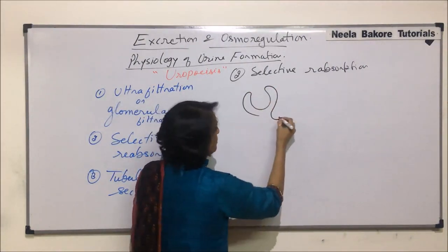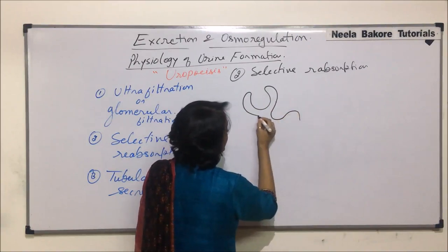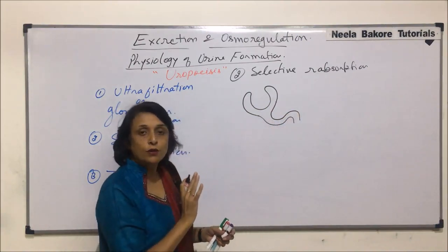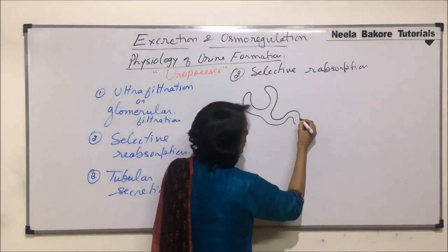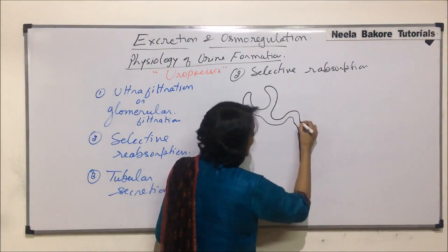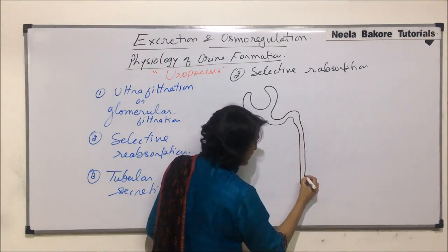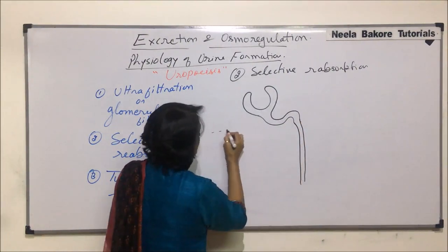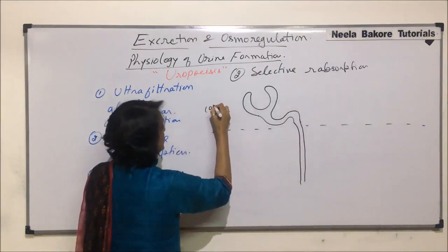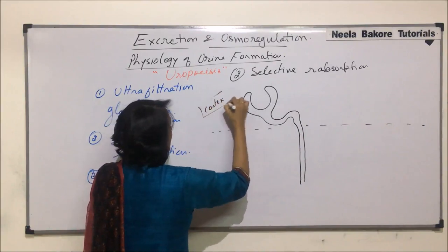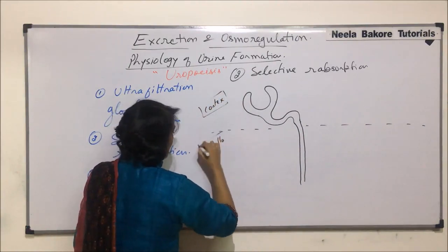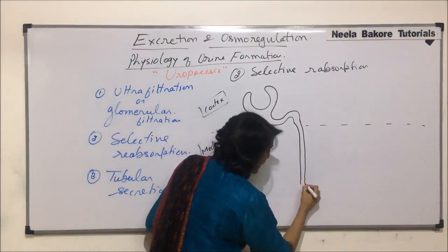This is Bowman's capsule. The first part that is formed is the proximal convoluted tubule. This proximal convoluted tubule goes deeper into the medulla and forms a loop-like structure — that is Henley's loop. This is the division line: this is cortex and this part is the medulla. So this is the loop of Henley.